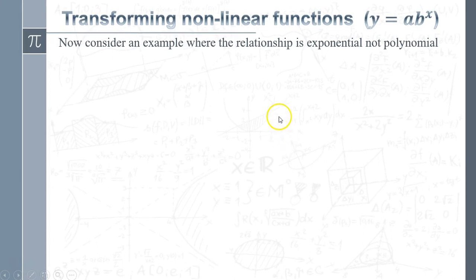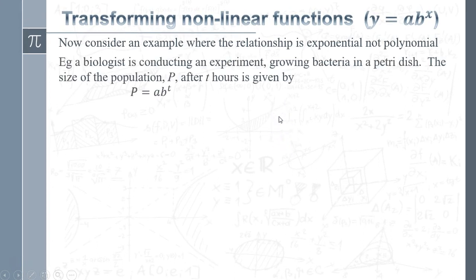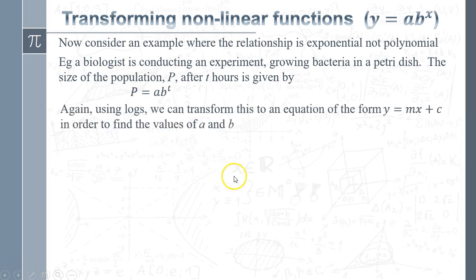So our relationship is exponential, not polynomial. In this particular case, a biologist conducts an experiment growing bacteria in a petri dish, and the size of the population, P, after t hours is going to be modeled using this relationship that has been suggested to us: P = ab^t. It's got an exponential relationship.